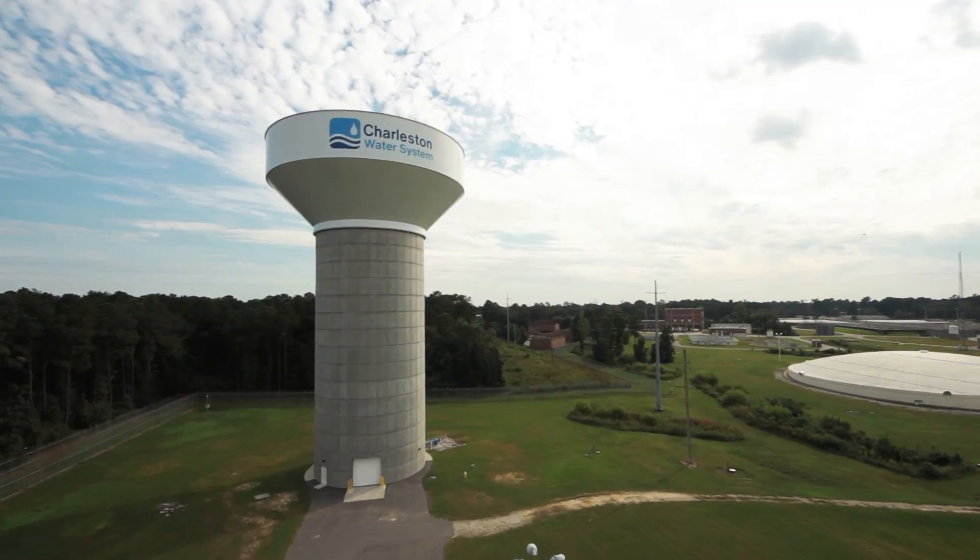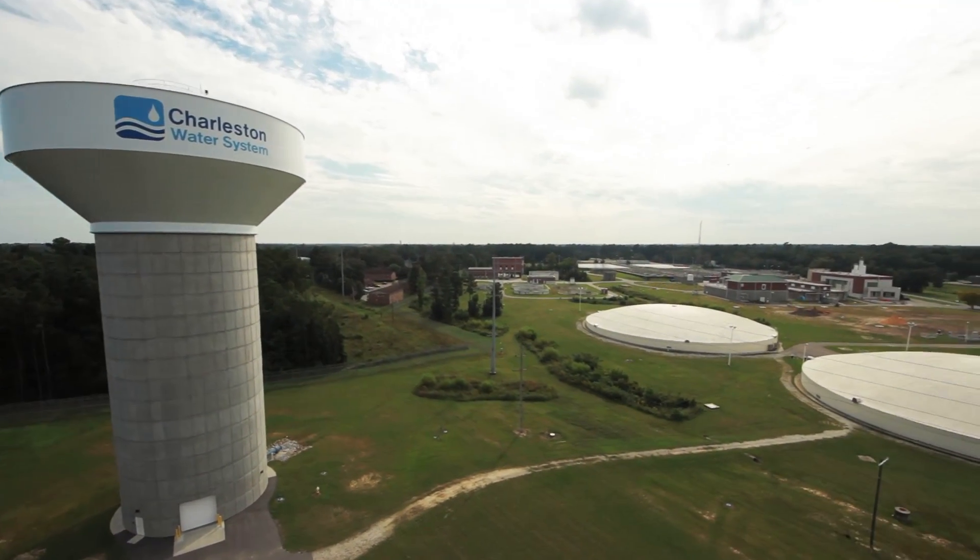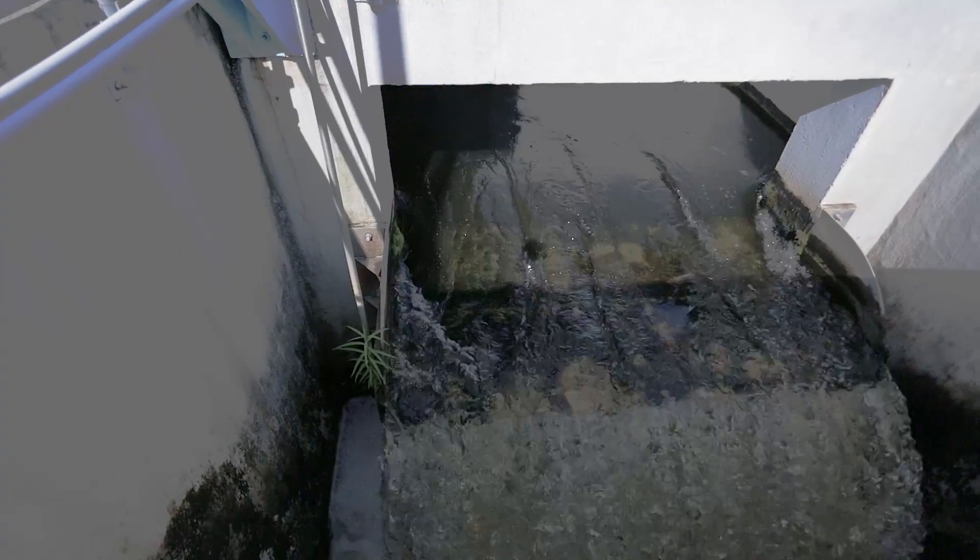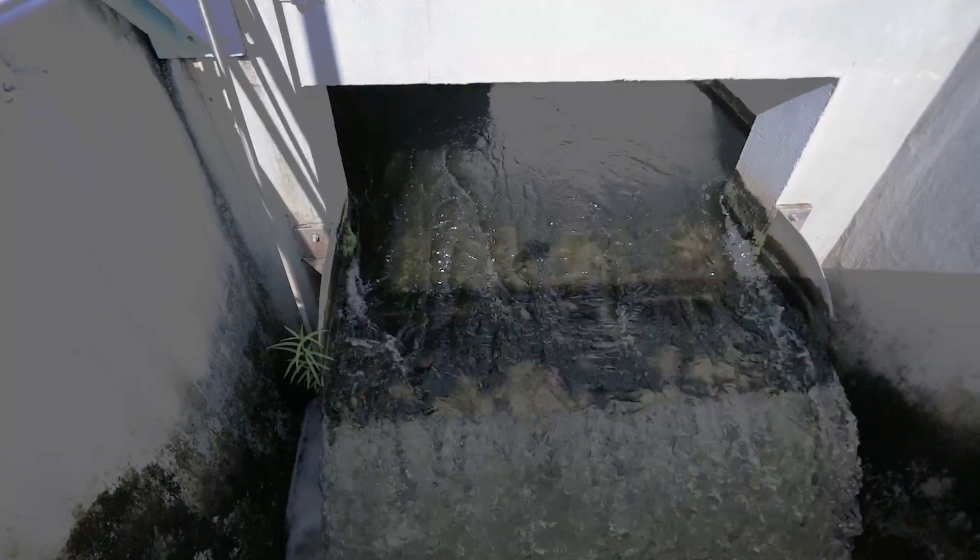Gravity carries the untreated water from both sources to the Charleston Water System Hanahan Water Treatment Plant. This water arrives with many impurities, sediments, and bacteria that must be removed to make it safe to drink.